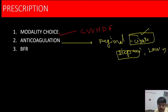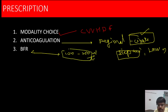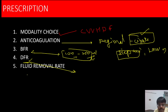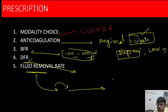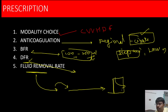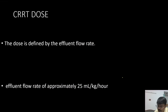Blood flow rate in CRRT is on average 100 to 250 ml per hour — typically around 100 to 150 ml per hour — which is slower compared to intermittent hemodialysis. The dialysate flow rate must also be set, specifying at what rate dialysate circulates in the opposite direction. The fluid removal rate — how much replacement fluid is removed through the hemofilter — must also be specified. These parameters — modality, anticoagulation, blood flow rate, dialysate flow rate, and fluid removal rate — form the complete CRRT prescription.